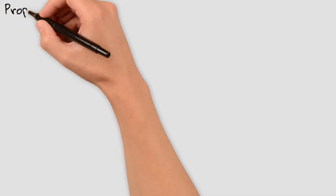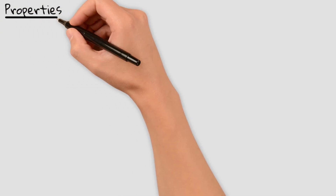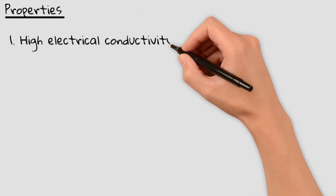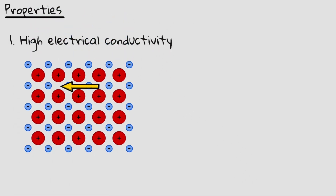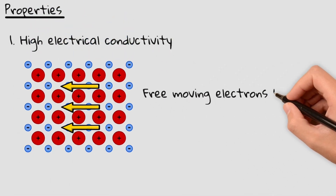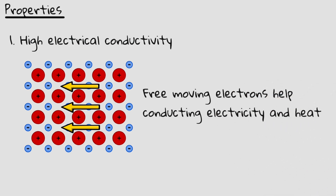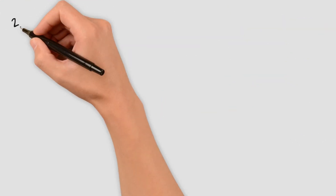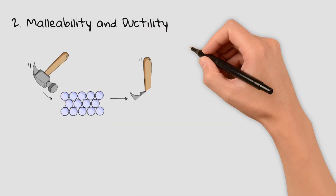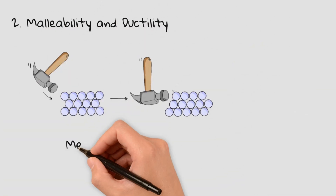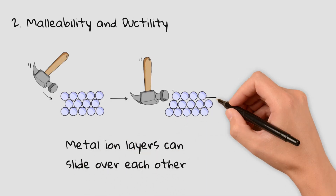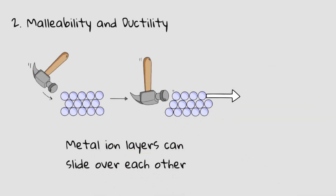This special bonding structure explains why metals have three important properties. First, high electrical conductivity: the free-moving electrons allow metals to conduct electricity and heat easily — this is why copper is used in electrical wiring. Second, malleability and ductility: metals can be bent, shaped, and stretched without breaking. Their positive ions are arranged in layers that can slide over each other while still being held together by the sea of electrons.